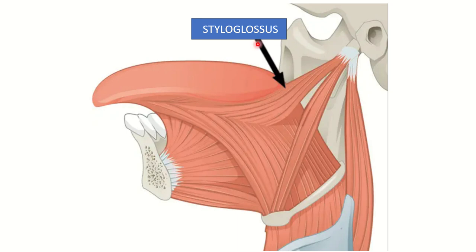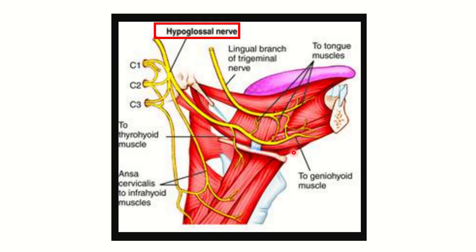The styloglossus originates from the styloid process and inserts into the tongue. The genioglossus arises from the genial tubercle and inserts into the tongue. The hyoglossus arises from the hyoid bone and inserts into the tongue. So the muscles are: styloglossus, genioglossus, and hyoglossus.